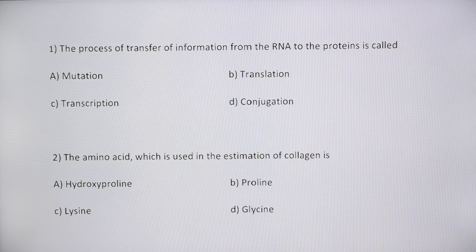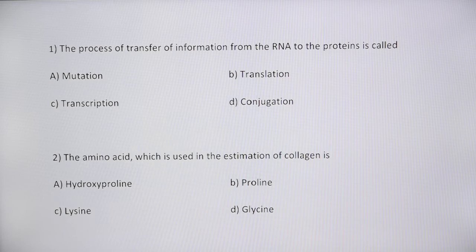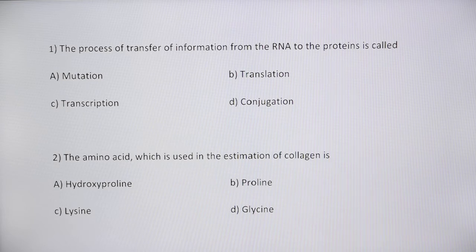First question: the process of transfer of information from RNA to proteins is called — options are mutation, translation, transcription, and conjugation. This is a direct question — translation is the process of transfer of information from RNA to proteins. We will also discuss the other terms: mutation, transcription, and conjugation.